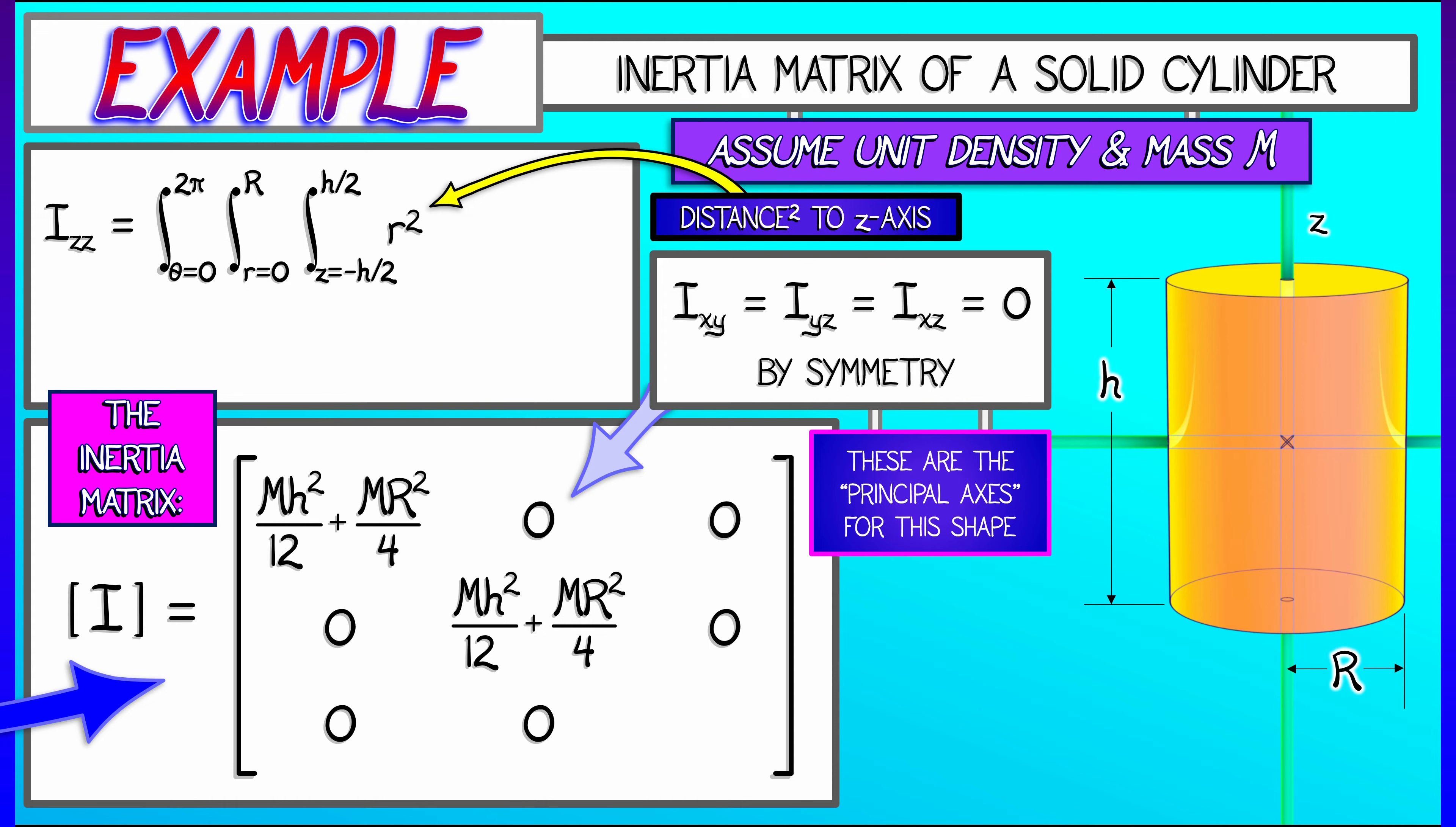Integrating this r squared times r dz dr d theta is going to be so easy. The theta integrates to 2 pi, the r cubed dr integrates to capital R to the fourth over 4, the dz integrates to simply h. This gives us pi r to the fourth h over 2, which, in terms of the mass, is mr squared over 2.